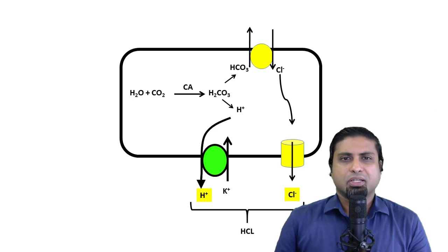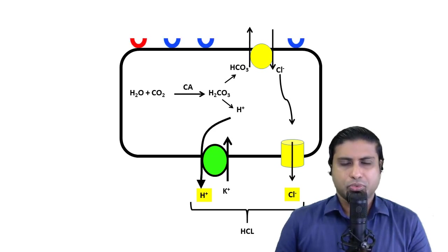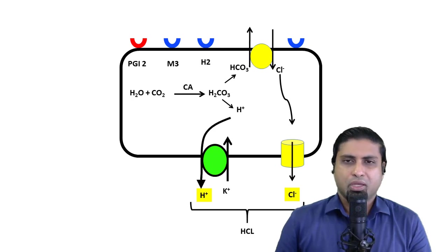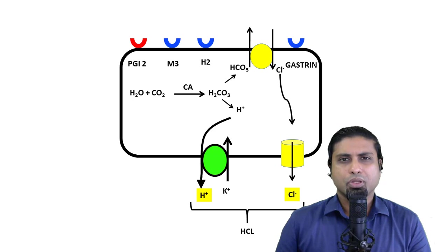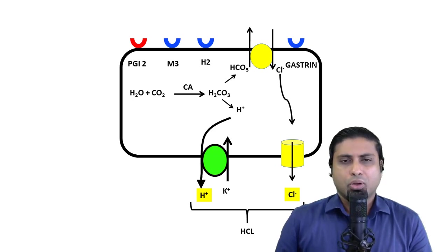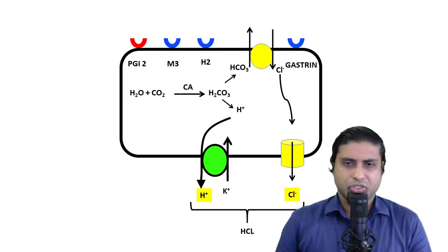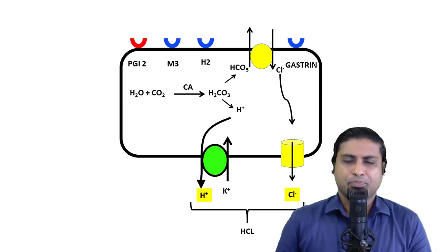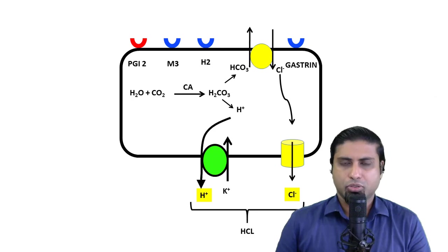The parietal cell is under the influence of four receptors. These include the receptor for PGI2, the receptor for acetylcholine namely the muscarinic M3 receptor, the receptor for histamine namely the H2 receptor, and finally the gastrin receptor. When PGI2 binds to its receptor, it results in a decrease in the secretion of hydrochloric acid. On the other hand, when the M3, H2 and gastrin receptors are stimulated, the parietal cell is stimulated to release more hydrochloric acid.